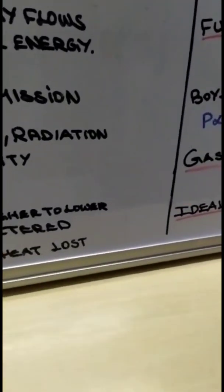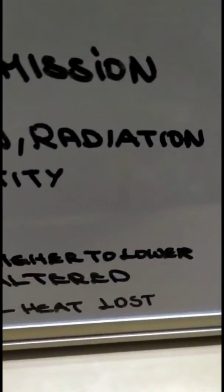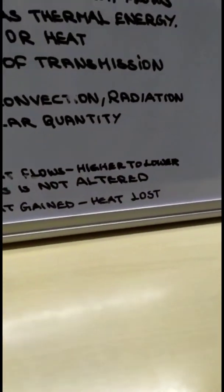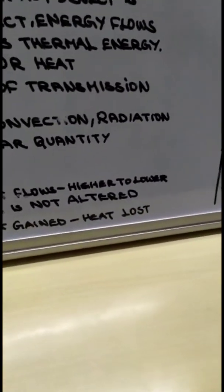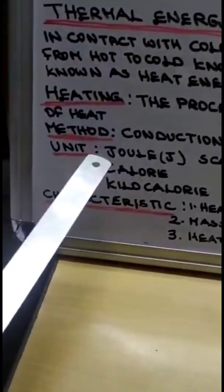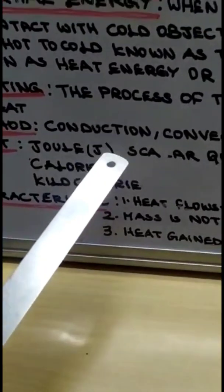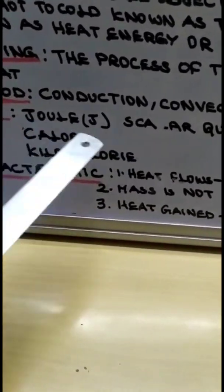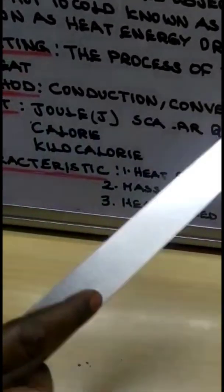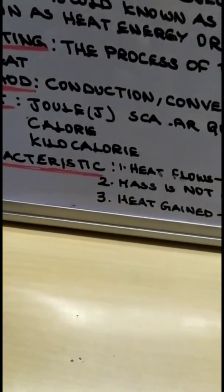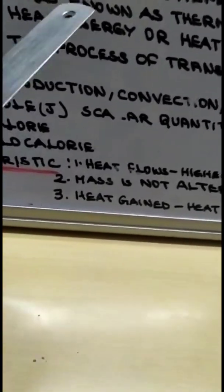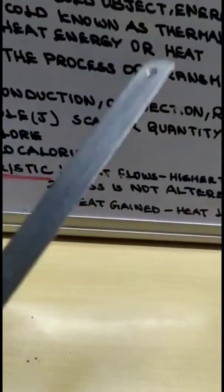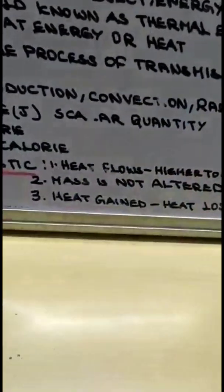When we say radiation, radiation is nothing but the heat energy which we receive from the sun or infrared rays, ultraviolet rays, etc. And unit of heat is joule, calorie, and kilocalorie. This joule - heat is a scalar quantity and this calorie can be defined as the amount of heat energy required to raise the temperature of 1 kilogram of water through 1 degree centigrade.